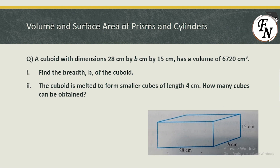Question number one: a cuboid has dimensions of 28 cm by b cm by 15 cm and a volume of 6720 cm³. Note that one dimension is missing and the volume is given — this is a type of case discussed in a previous video, but I will recall it here as well. The second part is the new one.